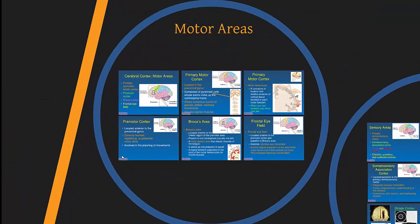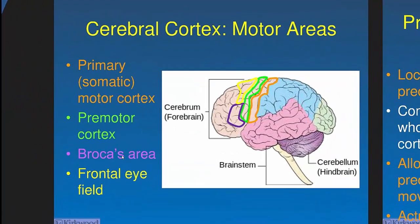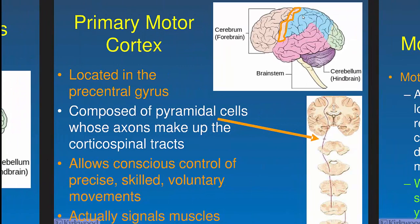Now breaking cortex into motor, sensory, and association areas. The four major motor areas in the frontal cortex are: primary (somatic) motor cortex, premotor cortex, Broca's area, and the frontal eye fields. The central sulcus runs between the frontal and parietal lobes. The precentral gyrus — the first gyrus in front of the central sulcus — is the primary motor cortex. These neurons move individual muscles, allowing conscious control of precise, skilled voluntary movements.